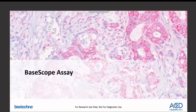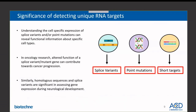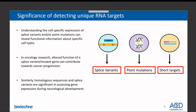Now we'll focus specifically on the BaseScope assay. Before getting into how it works, let's discuss why it's important to detect unique and short RNA targets. Detection of unique RNA targets can have significant pathological relevance. Understanding cell-specific expression of splice variants and permutations can reveal functional information about subcellular types. In oncology, splice variants and permutations can dramatically alter the function of the target gene and contribute to cancer progression. Highly homologous sequences are extremely difficult to detect due to their homology, but their functions are significant for assessing gene expression in tumor progression and neurological development. Detecting these unique RNA targets, such as splice variants, permutations, and short or highly homologous transcripts, can be very challenging, requiring probes designed against very specific and short sequences.